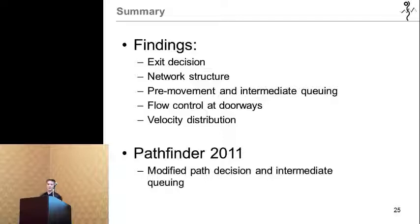So, in conclusion, for this building case study the exit decisions were seen of shortest versus quickest along with the treatment of the models as either individuals or groups. Also, the impact of pre-movement distributions was seen while carefully considering intermediate queuing. One of the main differences for Pathfinder in steering mode was the flow control of the doorways. And finally, the velocity distribution for this case study was seen to increase the final evacuation times.